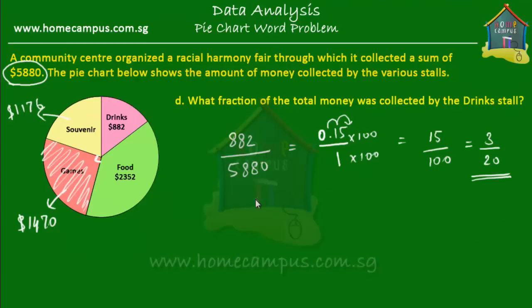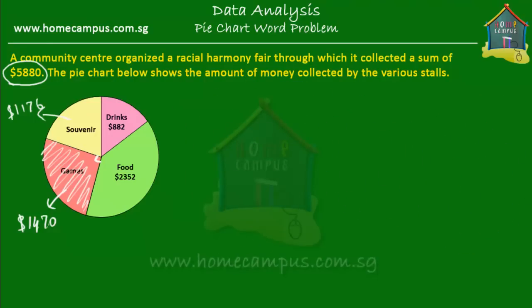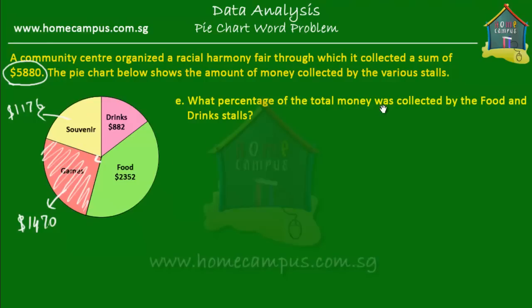If we take the pie and divide it into 20 slices, then three of those slices represent the amount collected by the drink stall. The next question is: what percentage of the total money was collected by the food and drink stalls? That means two stalls together — the food one and the drinks one. Together they collected $2,352 plus $882.